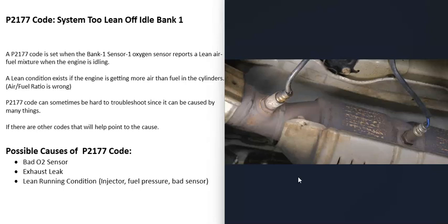When you get this P2177 code, the bank one sensor one O2 sensor is reporting back to the computer that the engine is running lean for some reason, which means the air-fuel ratio mixture is off — there's more air going into the engine than there should be. So it's going to need to be troubleshot to find out why.